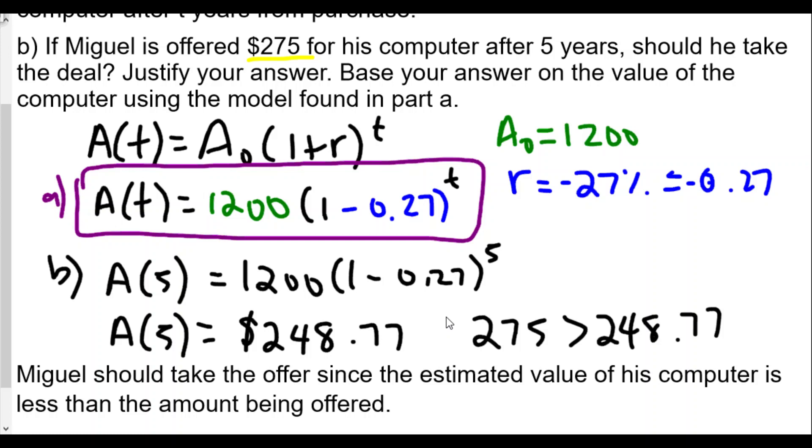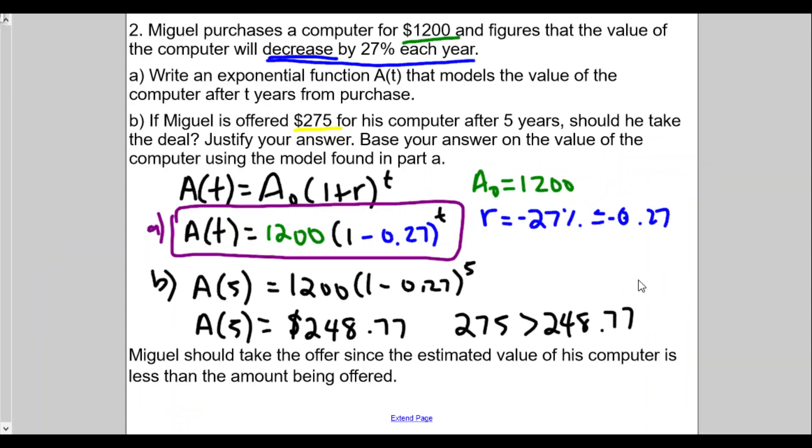We justify our answer by finding the value of the computer based upon the model we have after five years, and then we compare it to the offer of $275 from whoever's offering Miguel the money for the computer. This is the review for these two questions on compound interest.